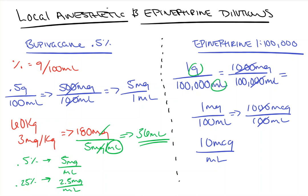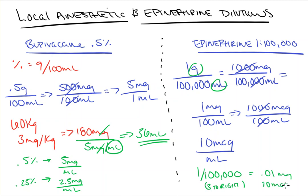There's also a quick method: just divide 1 by the denominator — in this case 1 divided by 100,000 — and move the decimal point 3 places to the right. That gives you 0.01 mg, or 10 micrograms per ml.